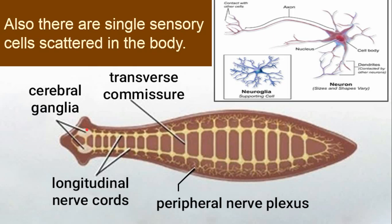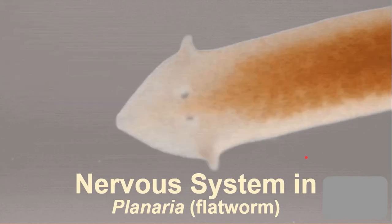Also, there are single sensory cells scattered throughout the body. These sensory cells are distributed across the entire body in a scattered manner. These individual neurons are sensory cells that can capture stimuli from the external environment, and they are found scattered throughout the body. So this is about the nervous system in Planaria.